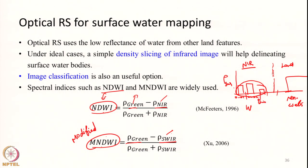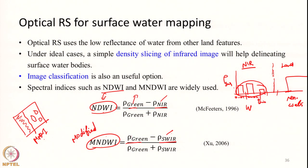One problem with MNDWI is that it has the same definition as NDSI — the normalized difference snow index. If we want to map open water bodies in regions that also have snow, such as high mountains with snow and lower valleys with lakes, applying MNDWI will highlight both snow and water pixels due to their similar reflectance characteristics. Therefore, just using MNDWI may not be suitable for such regions; other information like NDVI or NIR band data may be needed to separate snow from water.